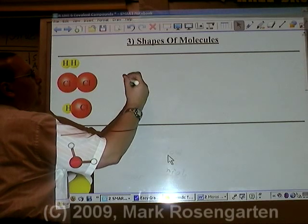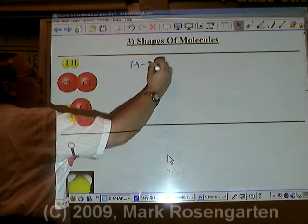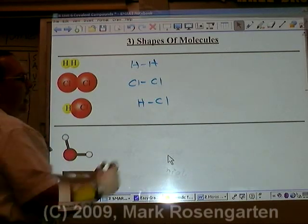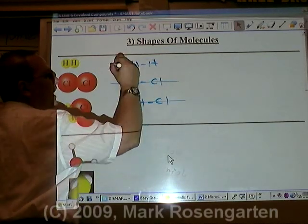Examples of linear molecules include H2, Cl2, and HCl. Notice that their atoms are arranged in a straight line.